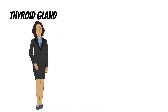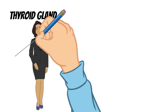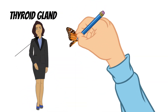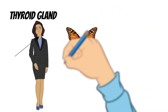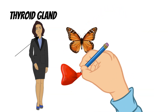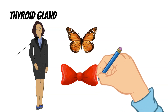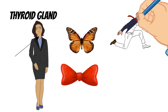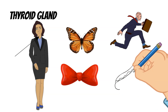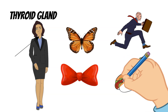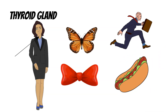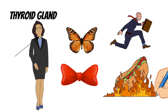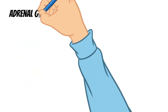The thyroid gland is located at the base of the neck and is shaped like a butterfly — or you could say it looks like a bow tie. The thyroid gland produces a hormone that controls how fast your cells can burn the food you eat to release energy.